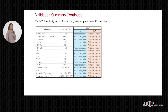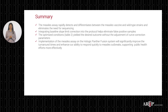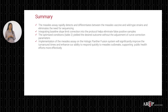Before we wrap up, I want to highlight some key points. The measles assay allows for rapid detection and differentiation between the measles vaccine and wild-type strains, eliminating the need for sequencing. We discussed two approaches to address false positive samples: in the first approach, integrating a baseline correction slope limit helped eliminate those flatter-looking curves near the FAM baseline; and in the second approach, optimized assay conditions yielded the desirable outcome without adjustment of analysis parameters. We believe that implementation of the measles assay on the Hologic Panther Fusion system will significantly improve turnaround times and enhance our ability to respond quickly to measles outbreaks.